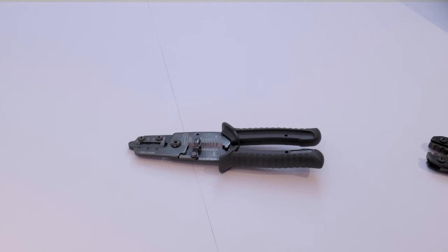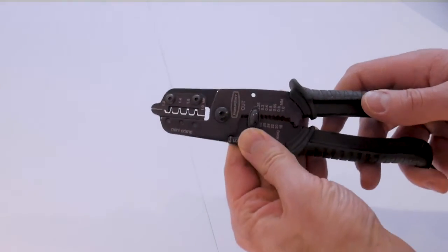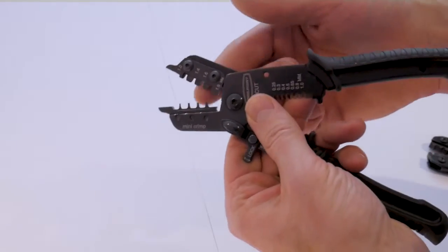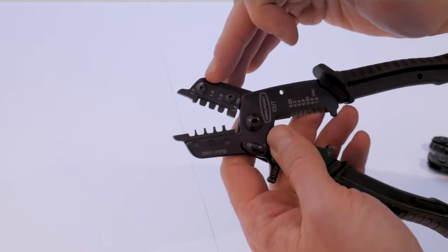So let's take a closer look at this tool and figure out how we can use it and how we can avoid messing up our crimps. So removing the lock here you can see down at the bottom it does say micro crimp and it comes with a variety of dies here.